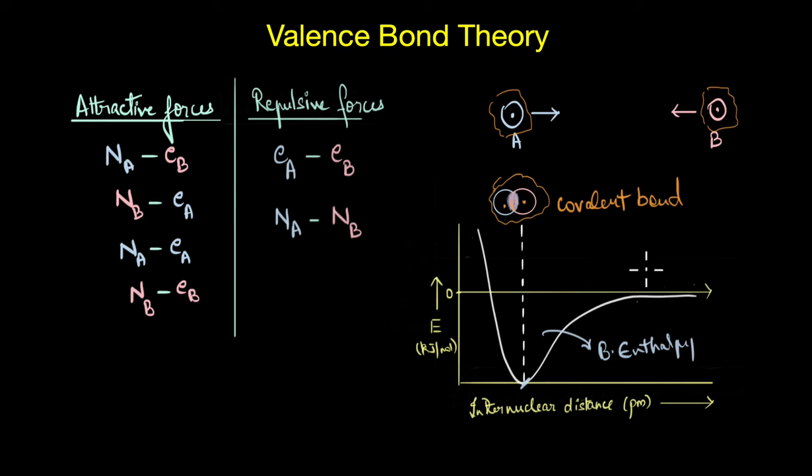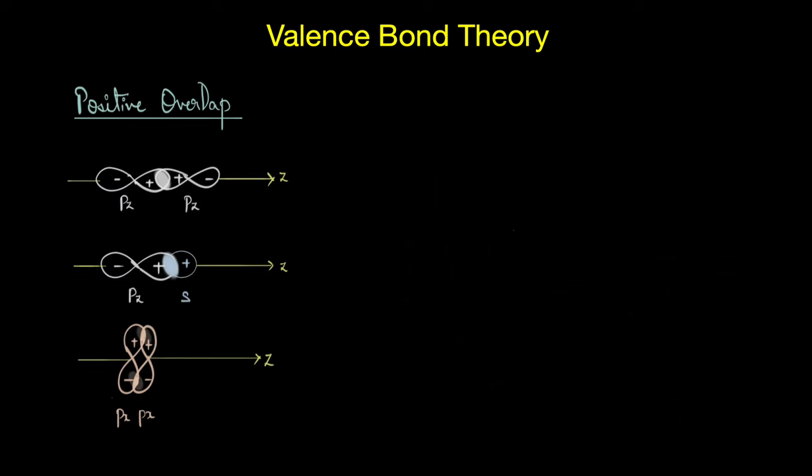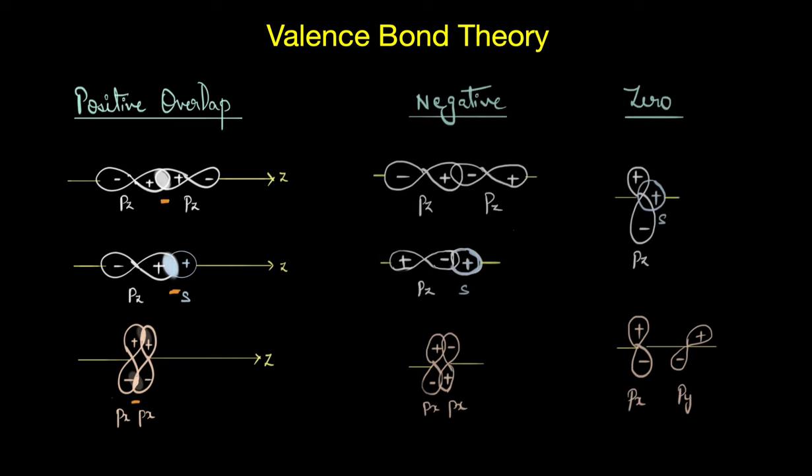According to VB theory, only positive overlap can result in a covalent bond. Positive overlap occurs when the atomic orbitals have the same sign and orientation in space—that is, the wave functions of the atomic orbitals are in the same phase. So obviously, a positive overlap would result in a region of high electron density between the nuclei of the combining atoms. In each of these cases, you can see that the overlap is happening between the orbitals that are in the same phase.